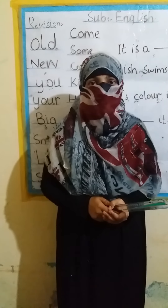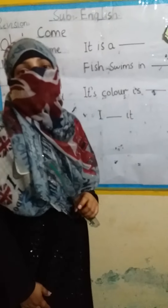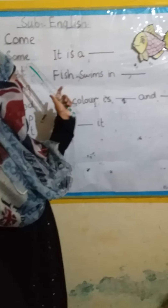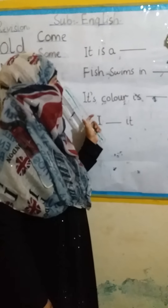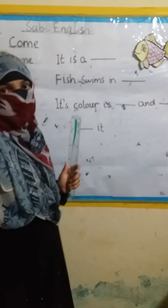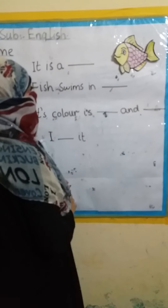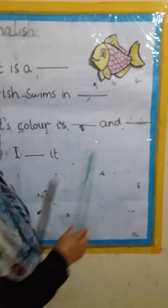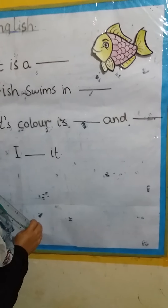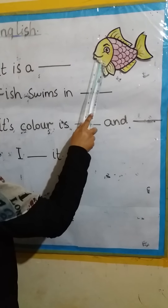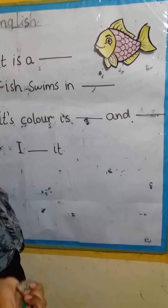We will fill the blanks to complete the sentence. Let's see — what is this? This is... yes, it is a fish. It is a fish, and the color of the fish is yellow and pink.